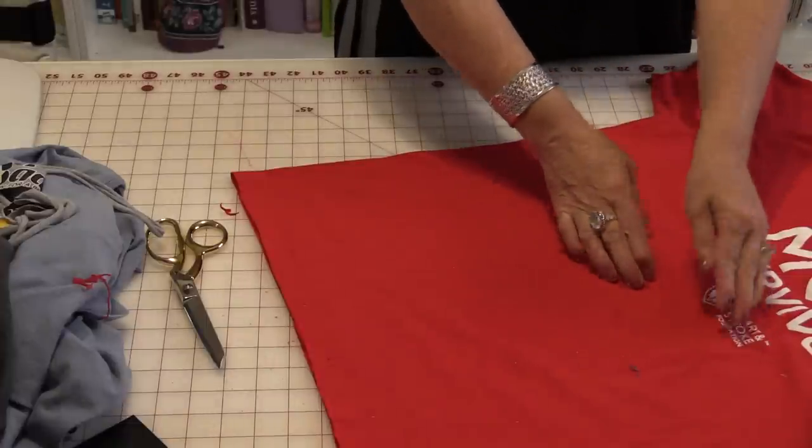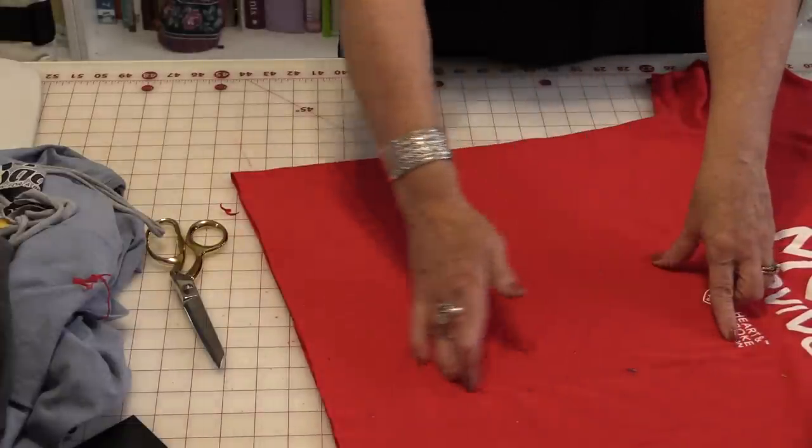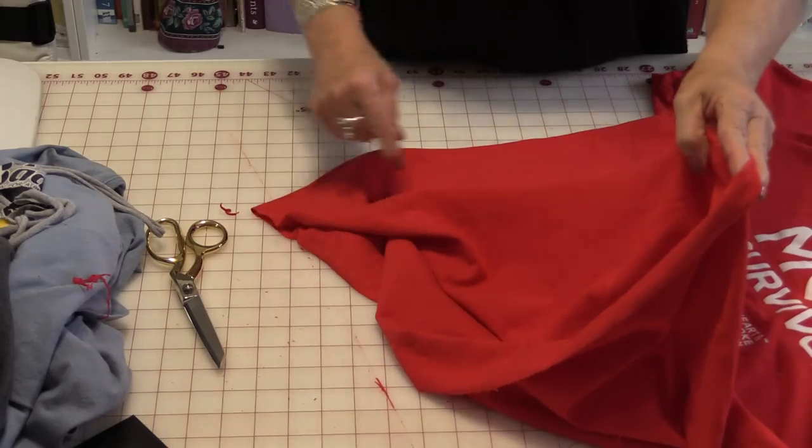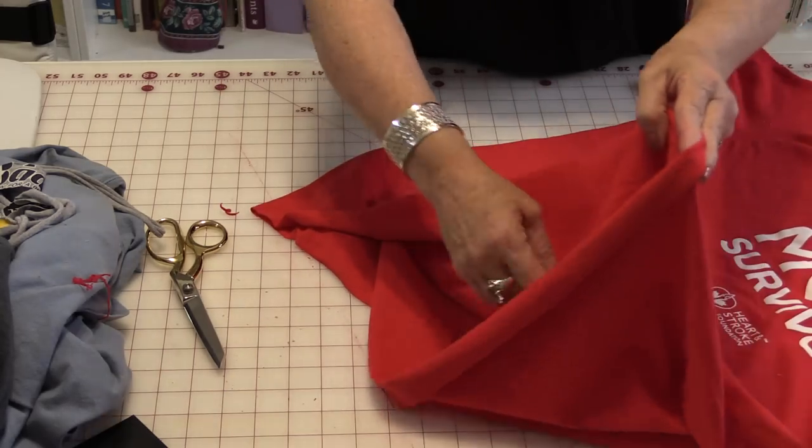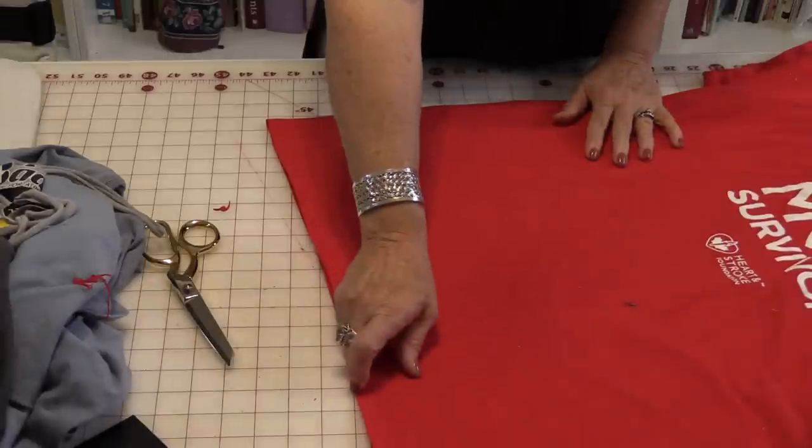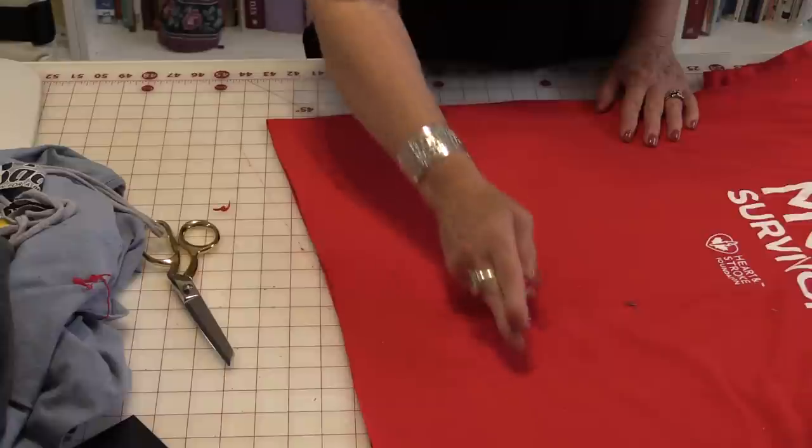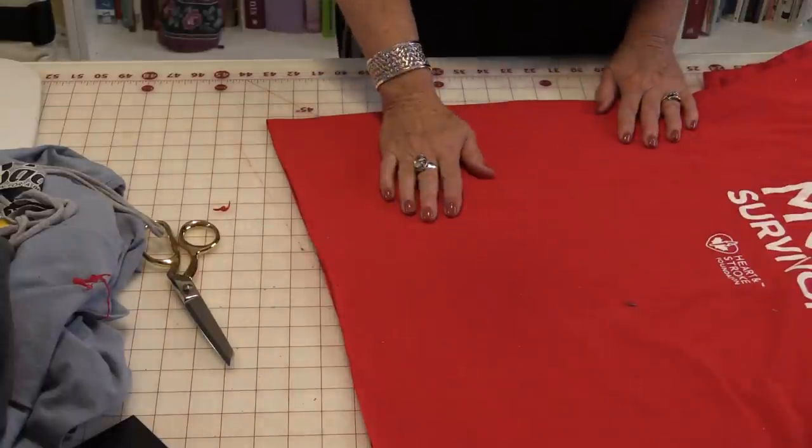For this t-shirt, I'm going to be able to use from this print all the way down to the hem. You want to maintain this circular shape that the t-shirt has. What you're going to do is you need to cut one-inch strips,